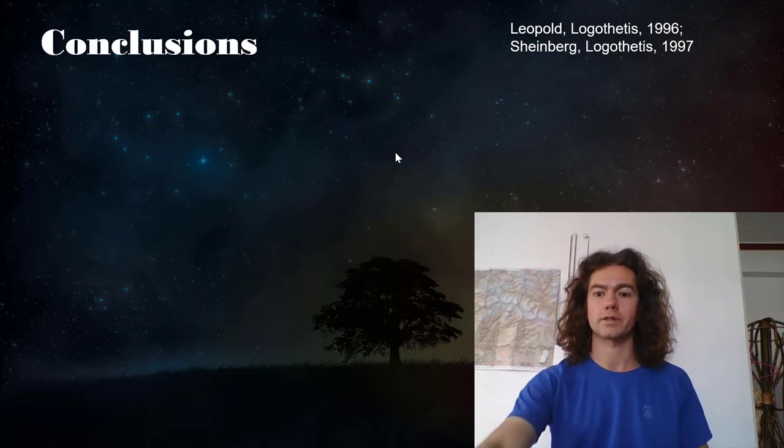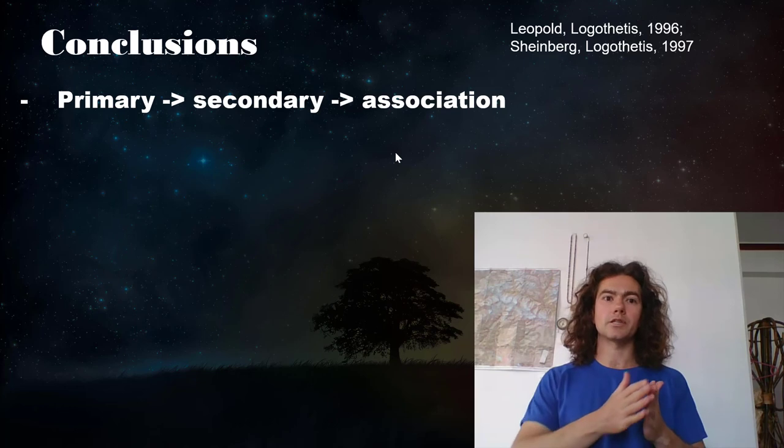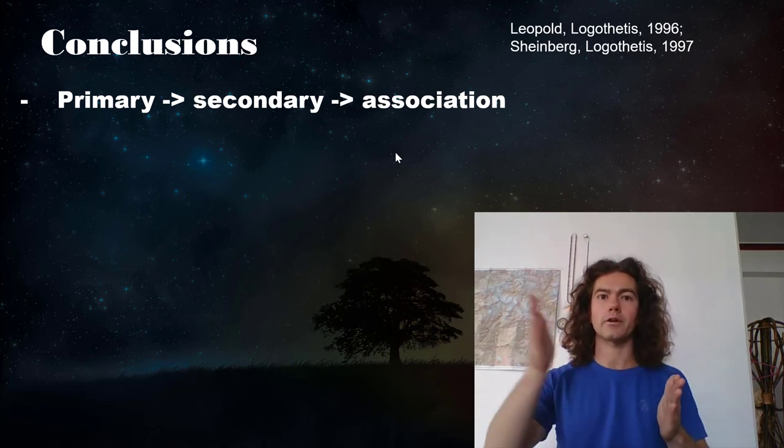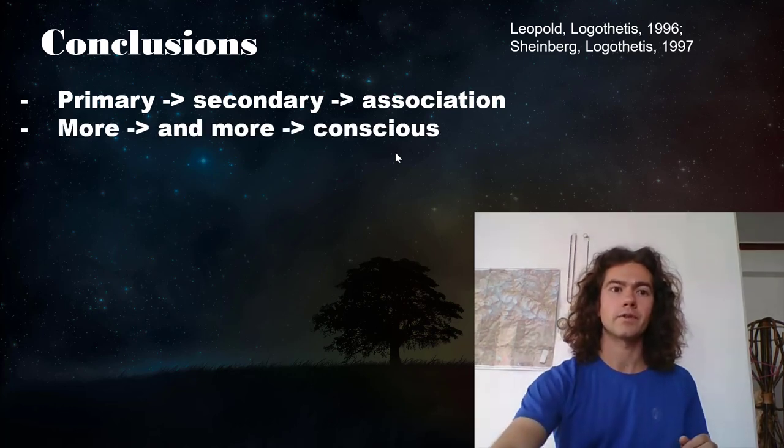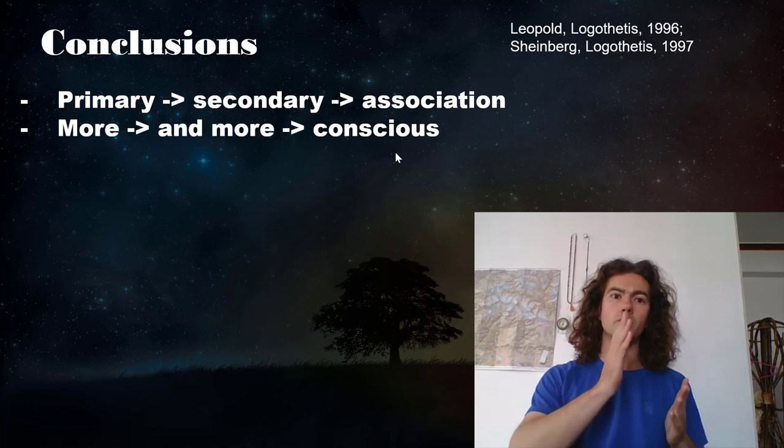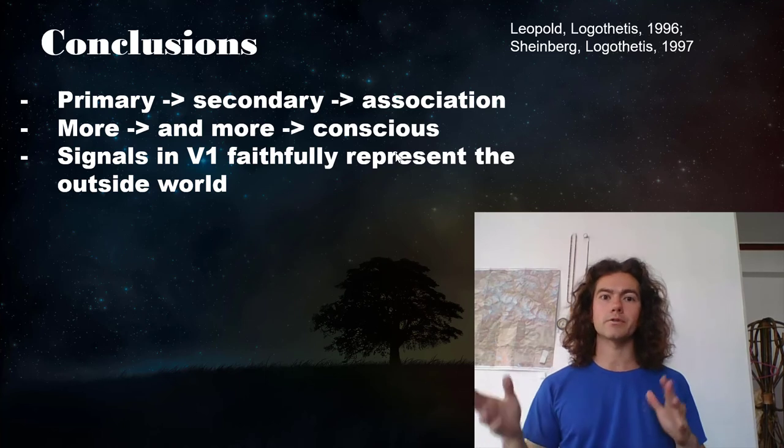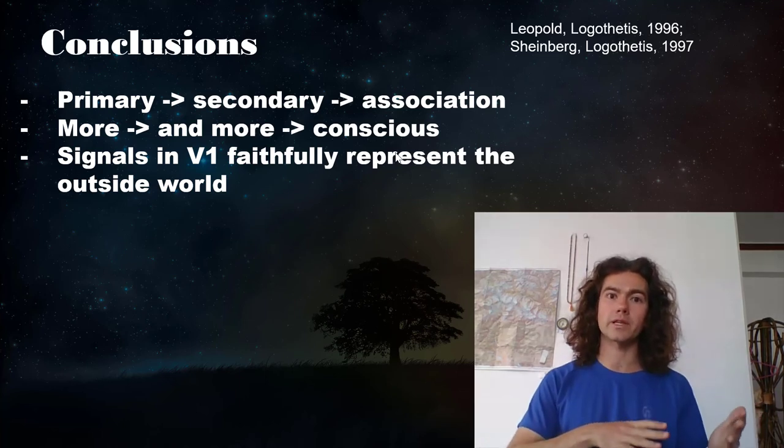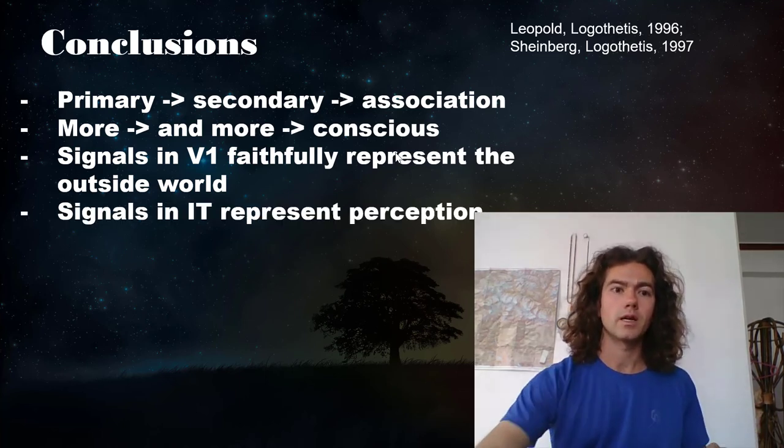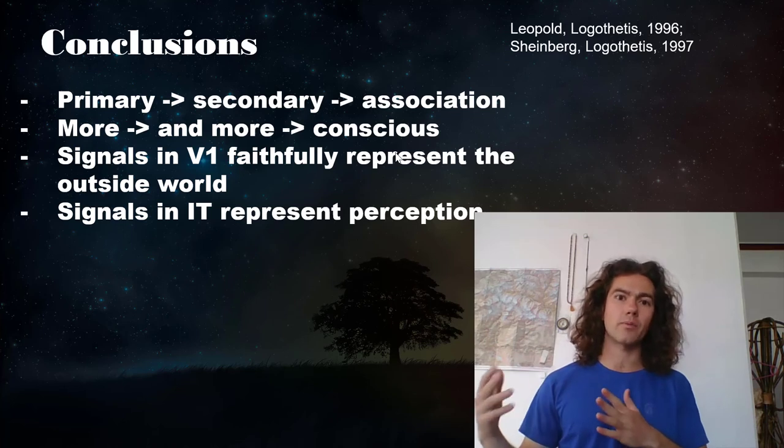So what can we conclude from this? So it seems like as you move from primary to secondary to association cortices, you also move more and more conscious. Signals in V1 tend to faithfully represent the outside world, whereas signals in IT tend to represent perception.